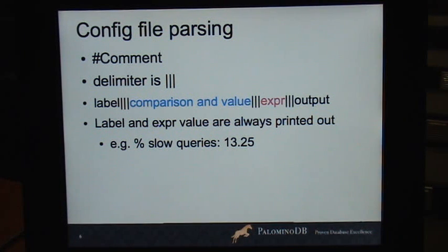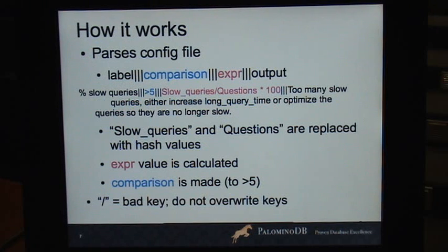And how it works is it just parses the configuration file. So I've put things in colors. And basically, you start with the label, comparison, expression, output. And this percent slow queries is an example. So you have the label, the comparison. So if you're greater than 5% slow queries, then it's going to print out the output, which is 'too many slow queries. Either increase long_query_time or optimize the queries so they are no longer slow.' So I think the original MySQLTuner just said increase long_query_time or just said you've got a lot of slow queries. So this doesn't tell you necessarily what to do—you write it out. And I have a default configuration file which has some of these. But if you're not a DBA, this isn't necessarily going to help you because it's just going to say, oh, what's going on? But it's a quick sanity check if you are a DBA so you don't have to do this all yourself. Or if you have something that you constantly want to monitor, you can do that using the script. The slow_queries and questions are replaced with the hash values that it got. So those are status variables and it would be information from show status or from the file that you have. The expression value is then calculated. The comparison is made: is it greater than 5?